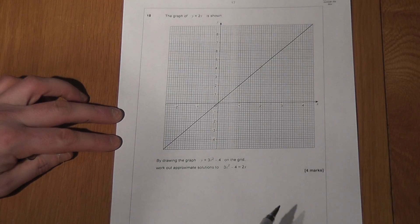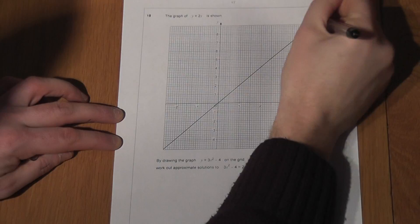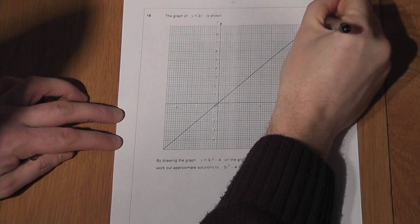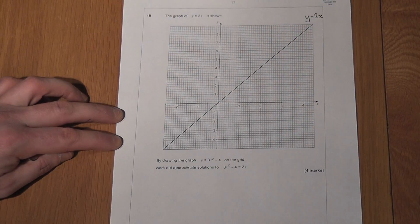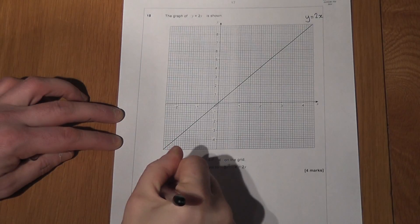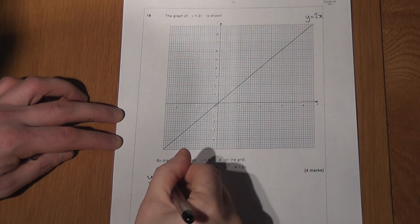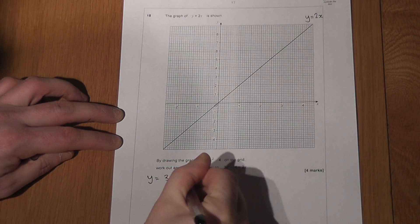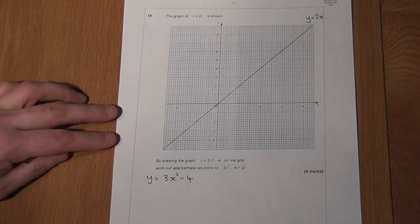In this question, we've been given the line y equals 2x and we've been asked to draw the curve rather, y equals 3x squared take away 4 on the grid.